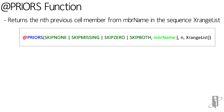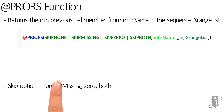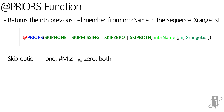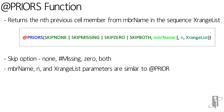The four parameters are: the skip option, member name, an optional numeric value, and an optional X range list. The first parameter is the skip option — we can use Skip None, Skip Missing, Skip 0, or Skip Both. The member name parameter is just like Prior and can be a valid single member name, member combination, or a function that returns a single member or member combination. The n parameter and X range list are optional, again just like the Prior function. Negative numbers in the n parameter have the same effect as the Next S function.